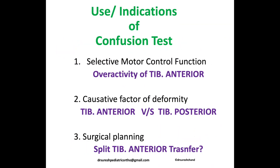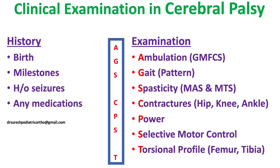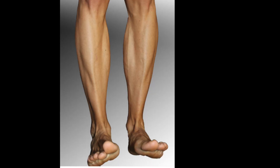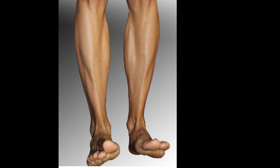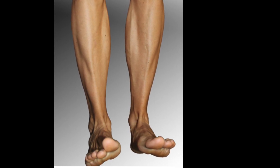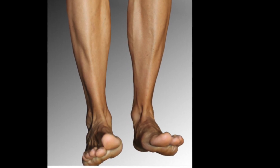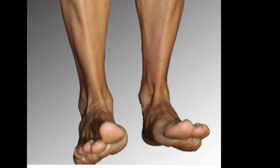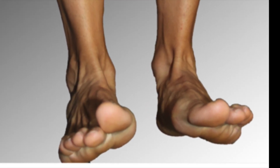The indications of using the confusion test are these, and we have already described in a previous video the use of selective motor control in the CP examination. The function of tibialis anterior muscle is dorsiflexion at the ankle and supination at the forefoot.